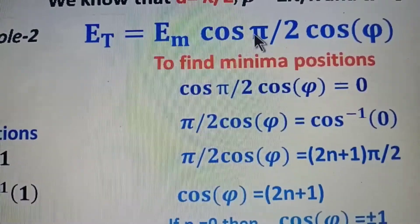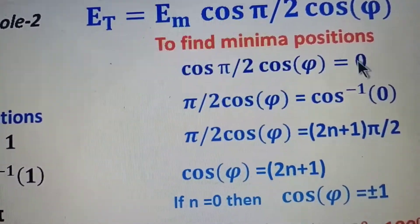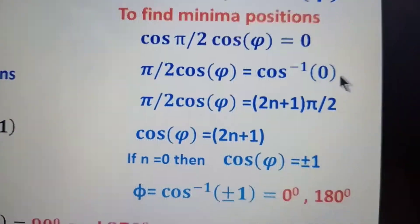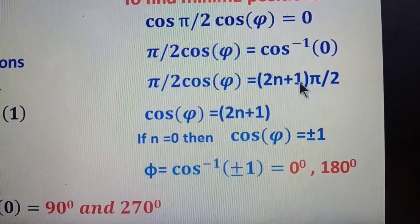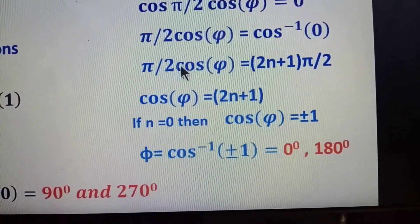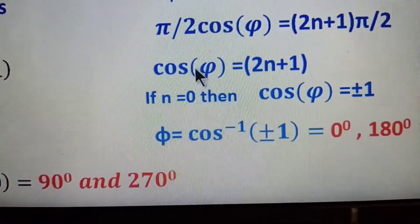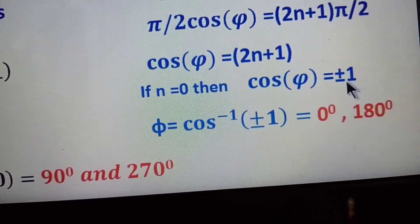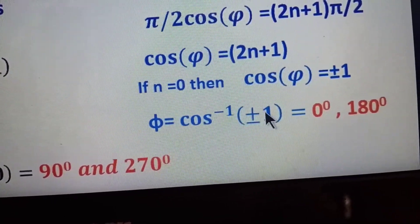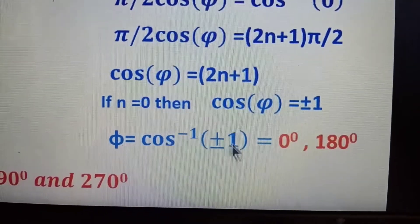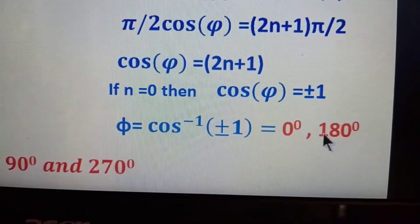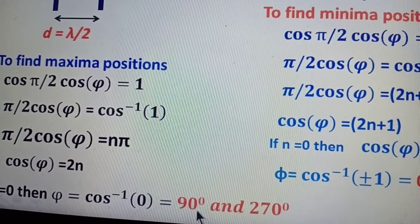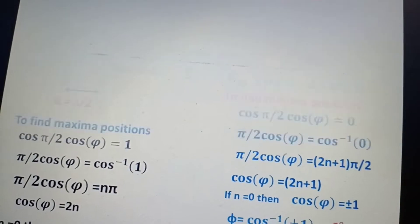For the minima positions, we set cos((pi/2)*cos(phi)) = 0, so (pi/2)*cos(phi) = cos⁻¹(0). The general solution is (2n+1)*pi/2. After simplification, cos(phi) = (2n+1). For n = 0, cos(phi) = ±1, giving phi = cos⁻¹(+1) = 0° and cos⁻¹(-1) = 180°. So the minima are at 0° and 180°, and the maxima are at 90° and 270°.